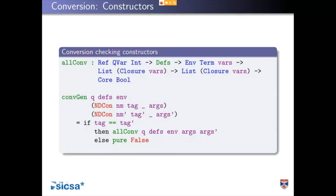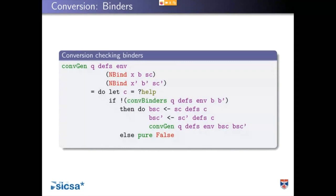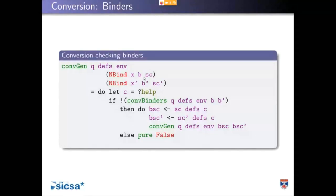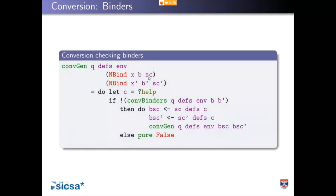Generally conversion is structural, and it's pretty short because we've got the evaluator and we're just looking at values. The most interesting case is conversion checking on binders, which is something you have to think about whenever you're doing a traversal of values. An nbind is a semantic representation of how to evaluate the scope of the binder. We have our name, our binder, and a function — that function is the scope of the binder. We can do conversion of the binder structure itself with conv binders, which just checks that the types convert.